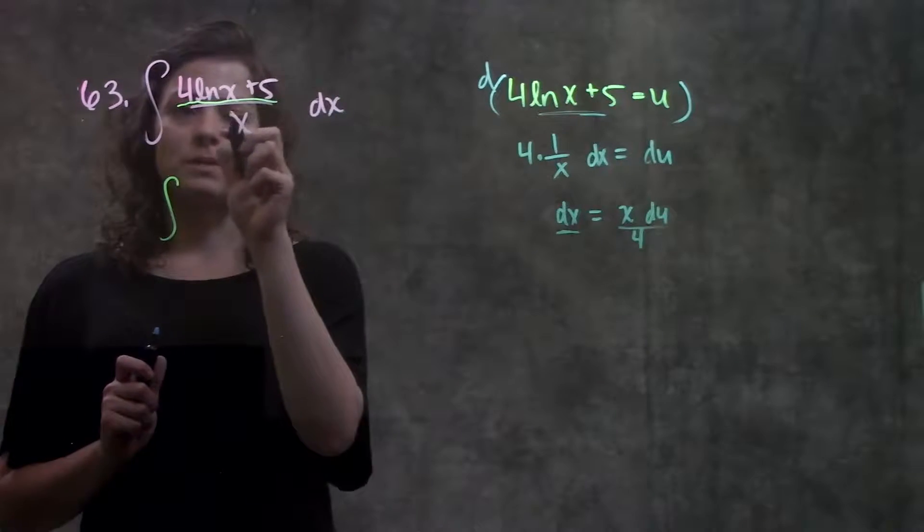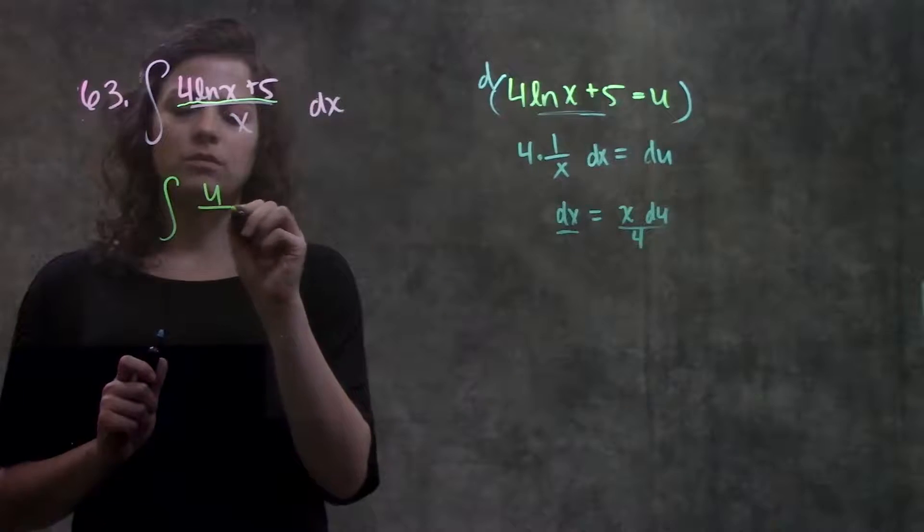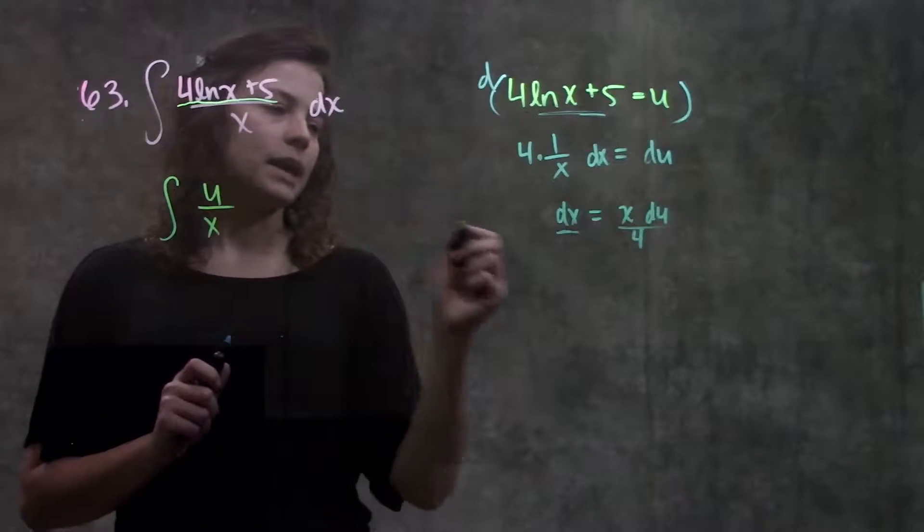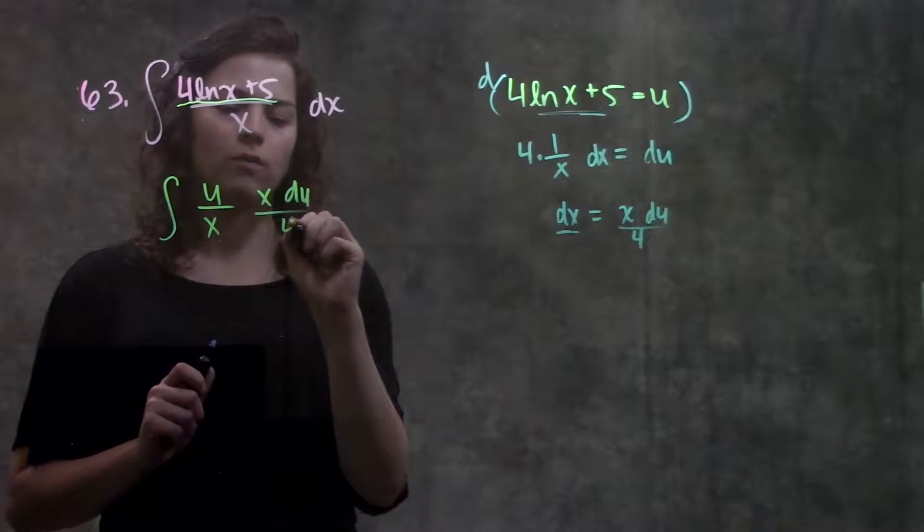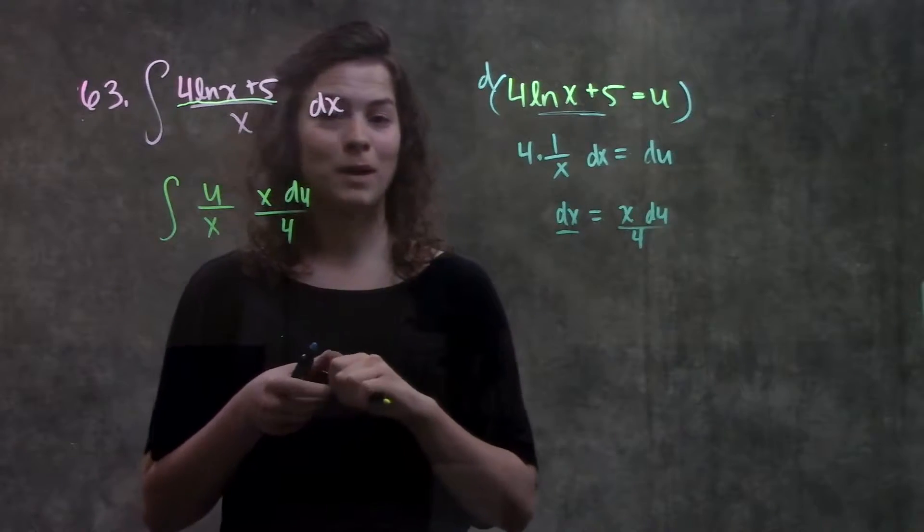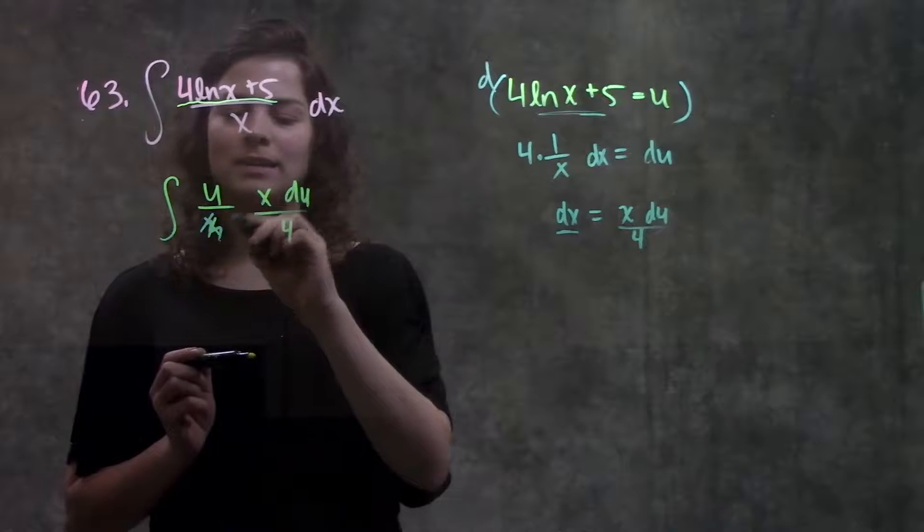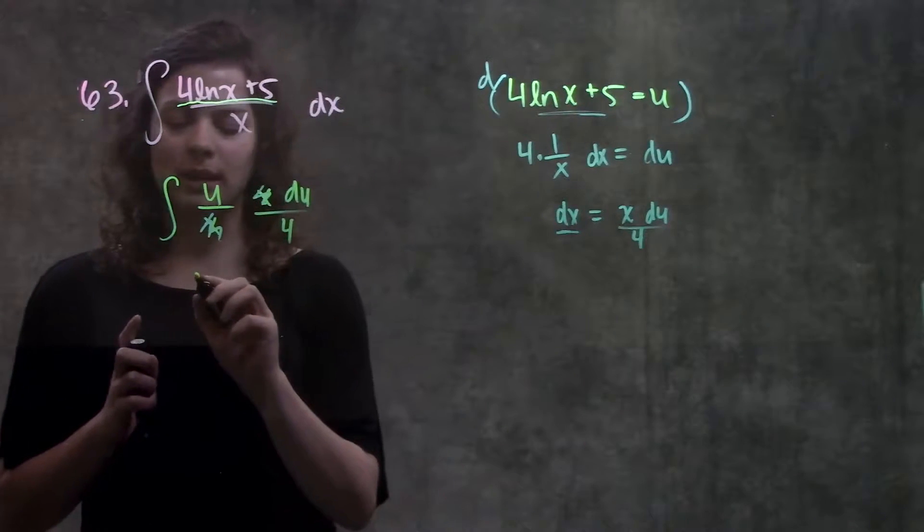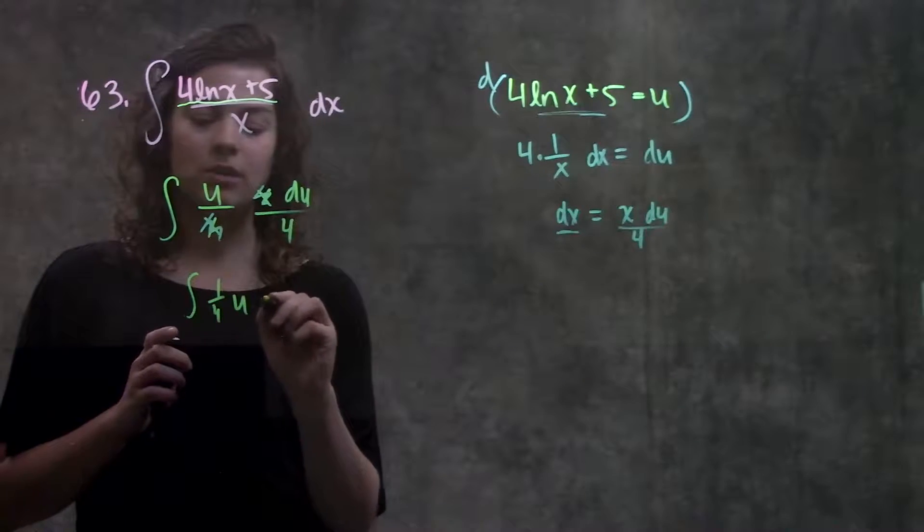So now in terms of u, this becomes, this top part is u over x, my dx becomes x du over 4. And now this problem is a lot simpler, because see, these x's cancel, and now I'm just left with 1 fourth u du.